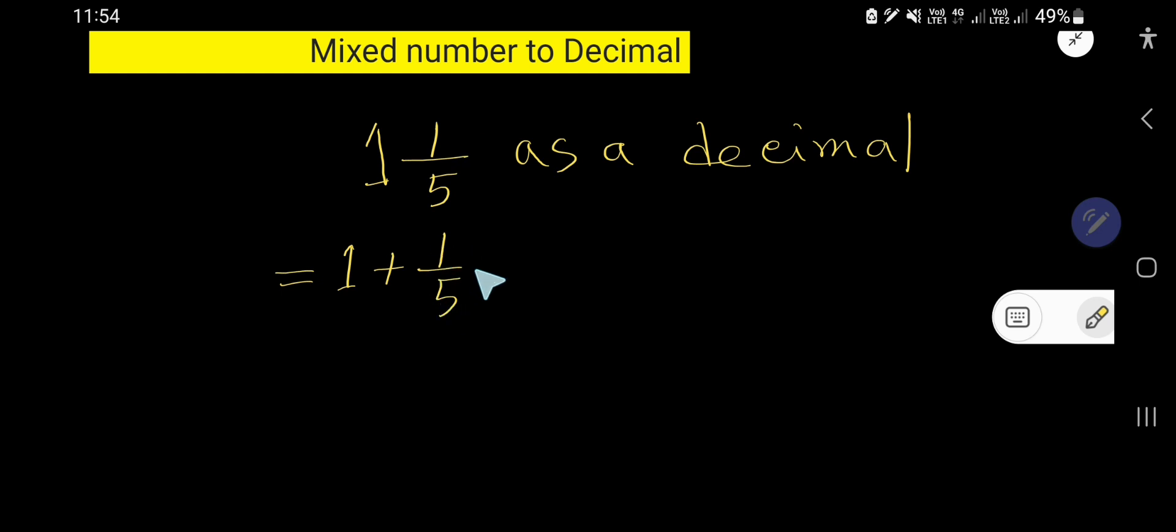Just change this fractional part to decimal, so one over five, just divide one by five. Five goes into one how many times? Actually zero times since it is less than five. Zero times five is zero.